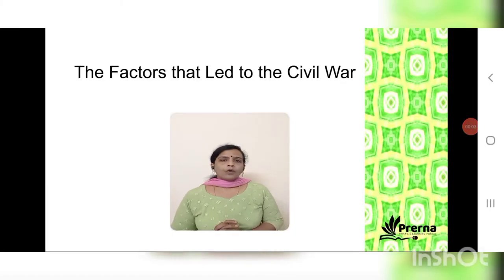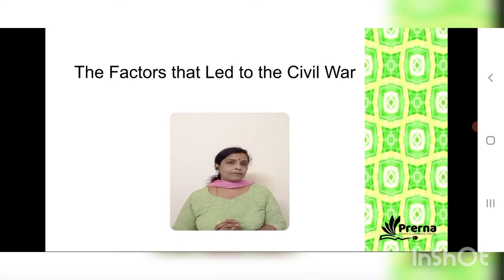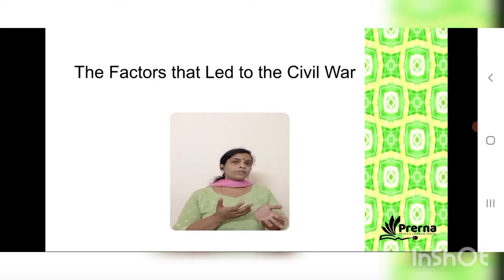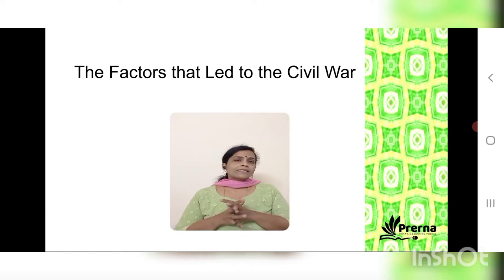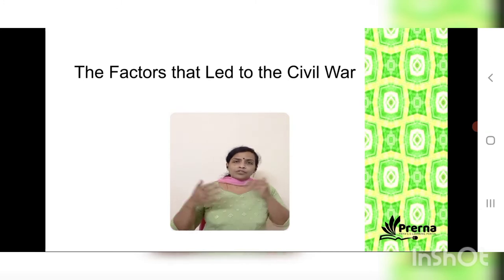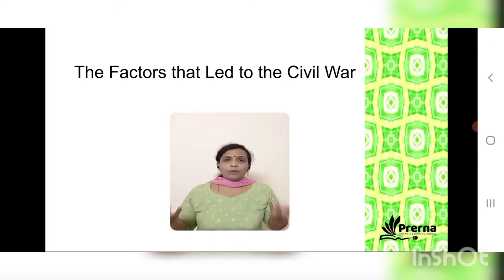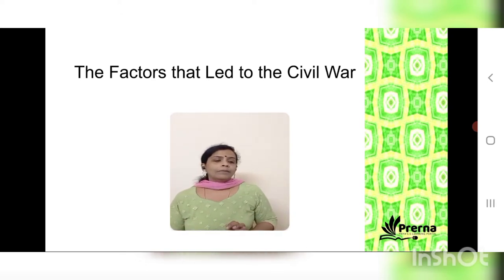The civil war, which was a result of the friction between the king and the parliament, was a very important chapter in the political history of England. In this class we are going to analyze the factors that led to the civil war. There was a clash between the supporters of the king — the royalists — and those who opposed the king.